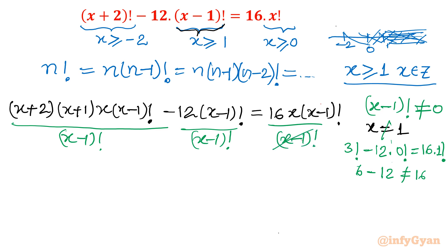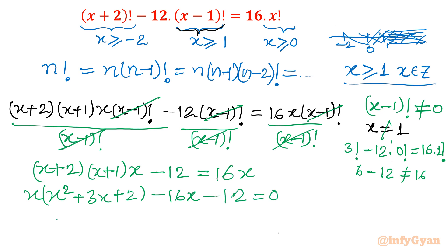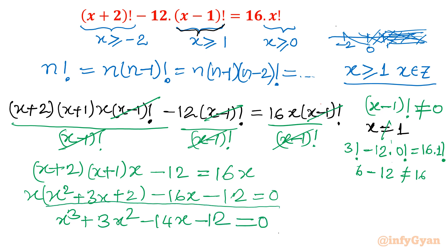After cancelling (x-1)!, what remains is: (x+2)(x+1)(x) minus 12 equal to 16x. Expanding this: x² + 3x + 2, multiplied by x, gives x³ + 3x² + 2x. Then minus 16x minus 12 equals 0, which simplifies to x³ + 3x² - 14x - 12 = 0. So we have obtained a cubic equation.